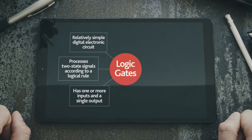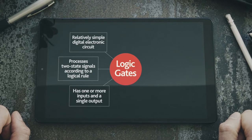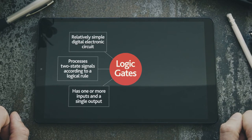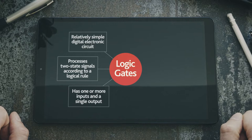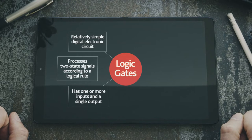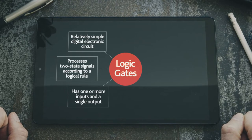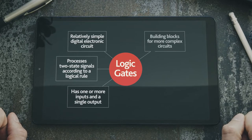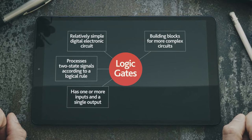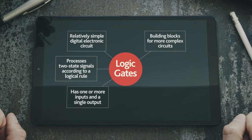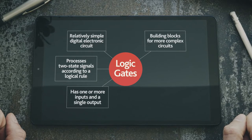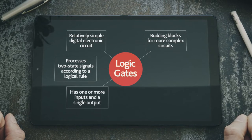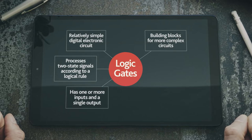A logic gate can be thought of like a light switch, where in one position the output is off, or zero, and in another it is on, or one. They are used by electronics engineers as building blocks for more complex circuits of gates, or logic circuits, in which the output of the gate forms an input to one or more other gates for further processing.